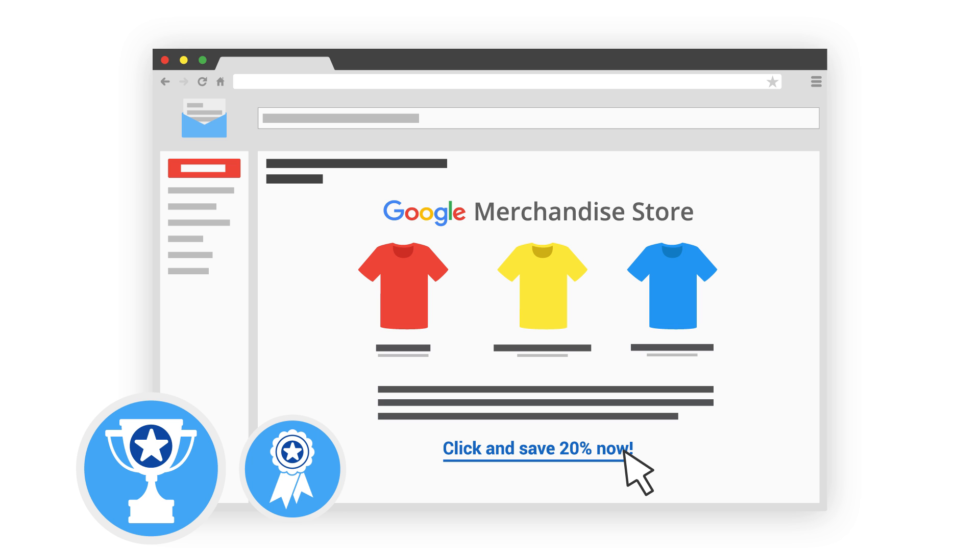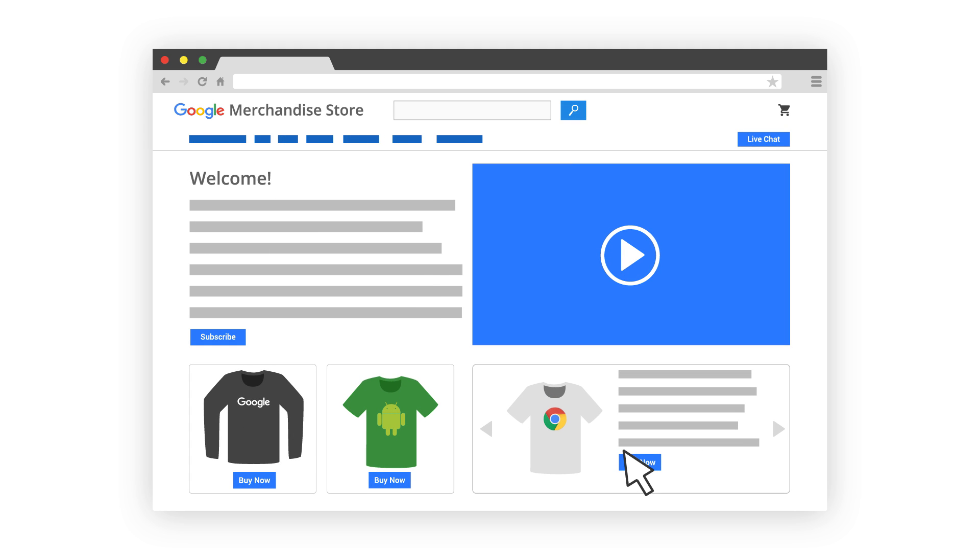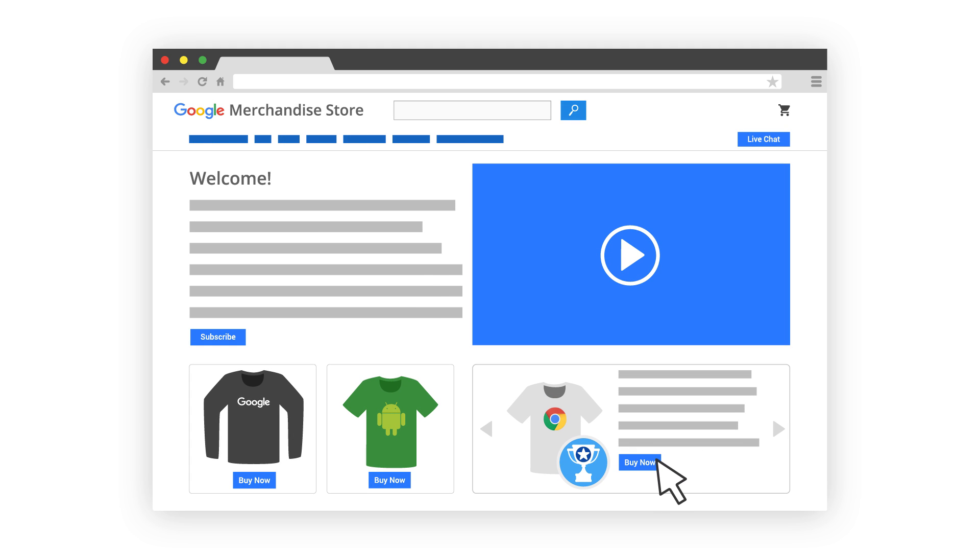Different businesses will naturally have different macro and micro conversions. For an e-commerce site, the macro conversion might be to purchase a product with a micro conversion of subscribing to a newsletter.